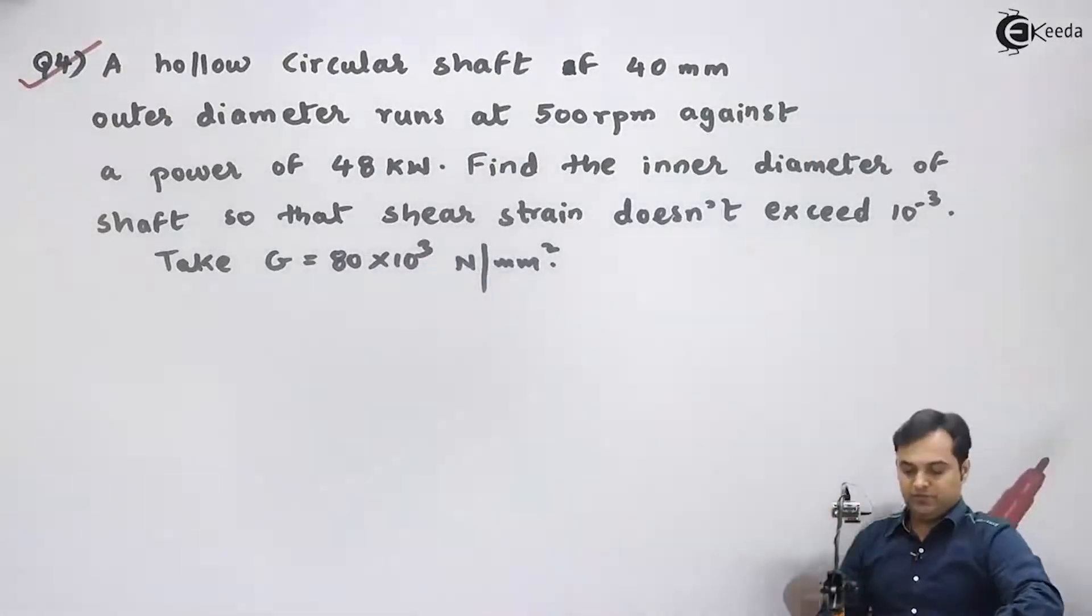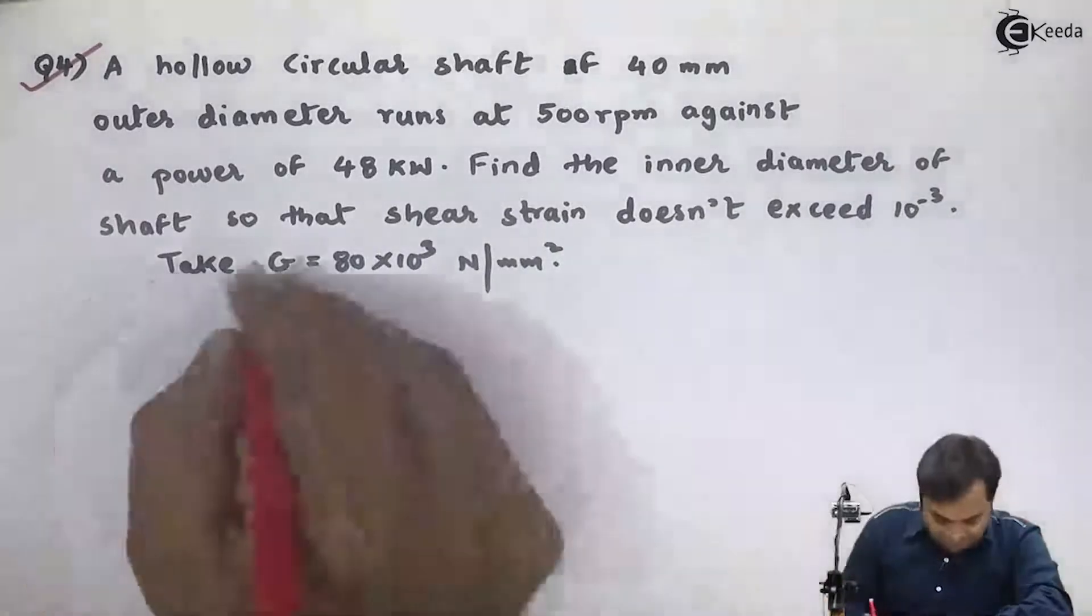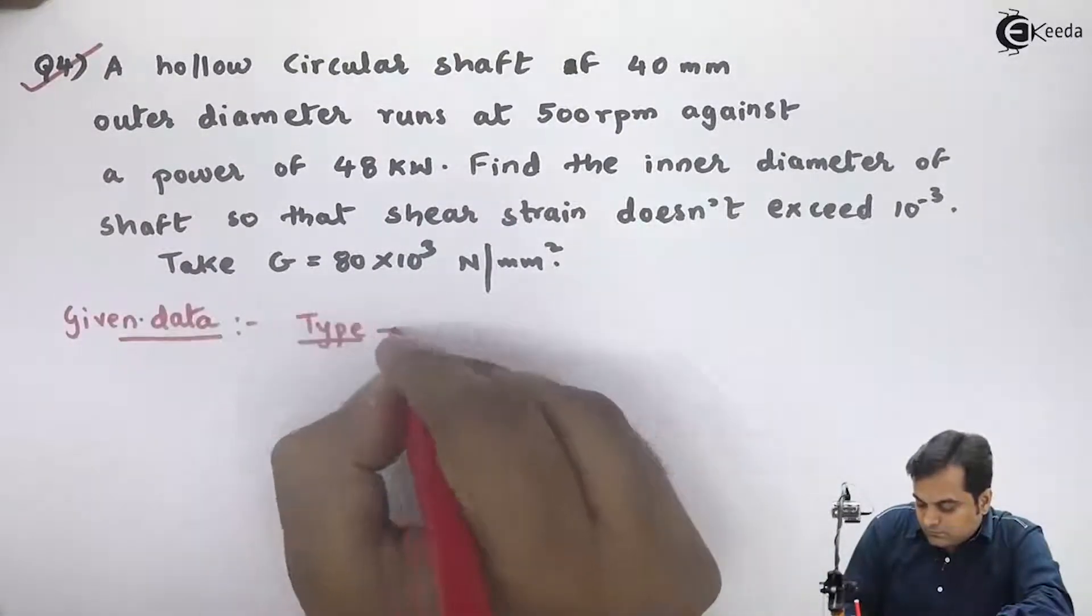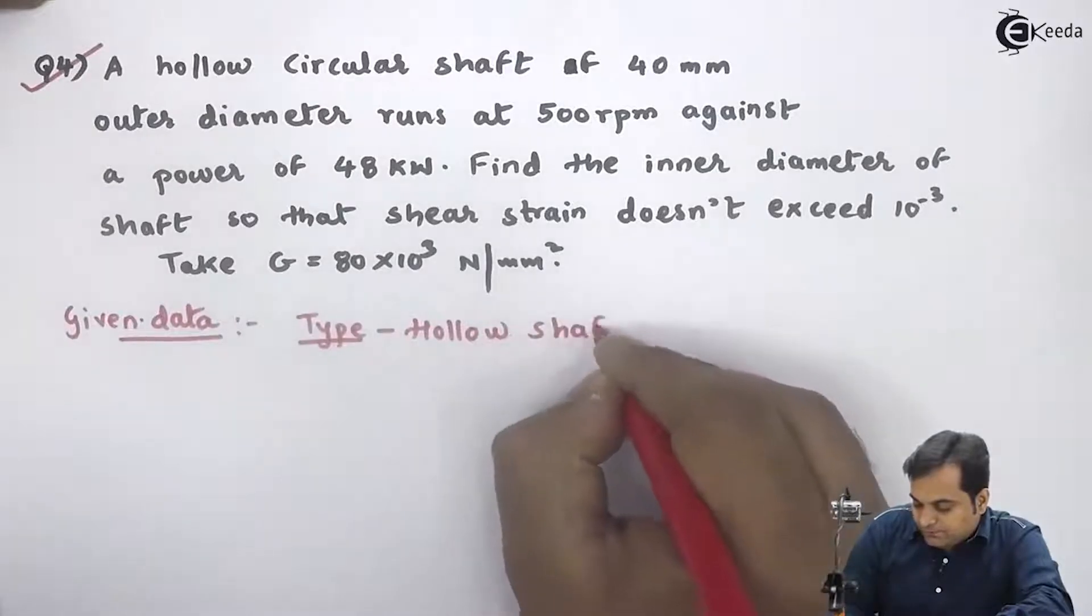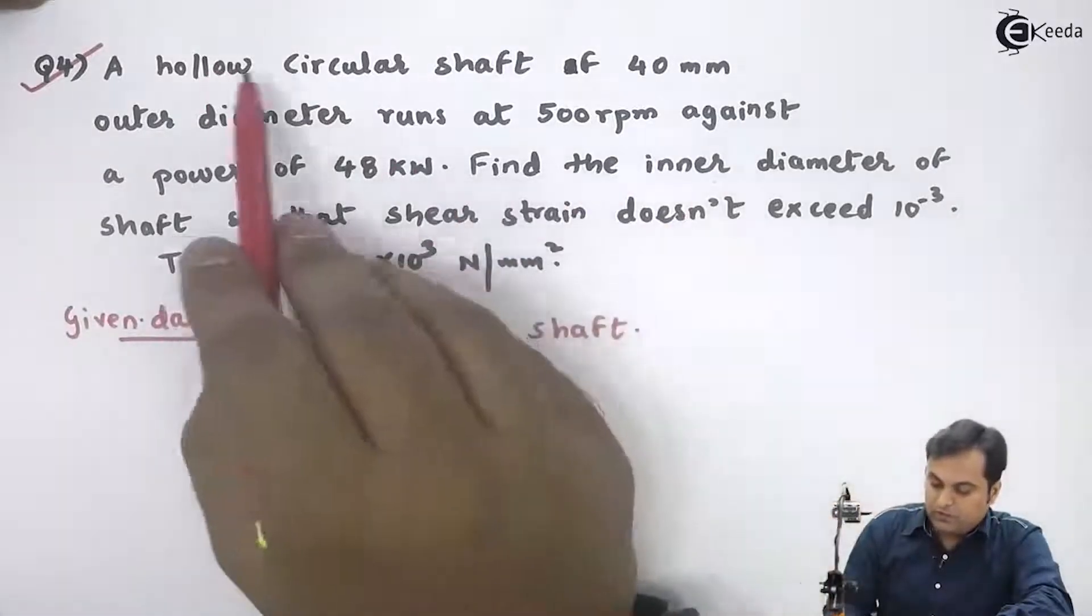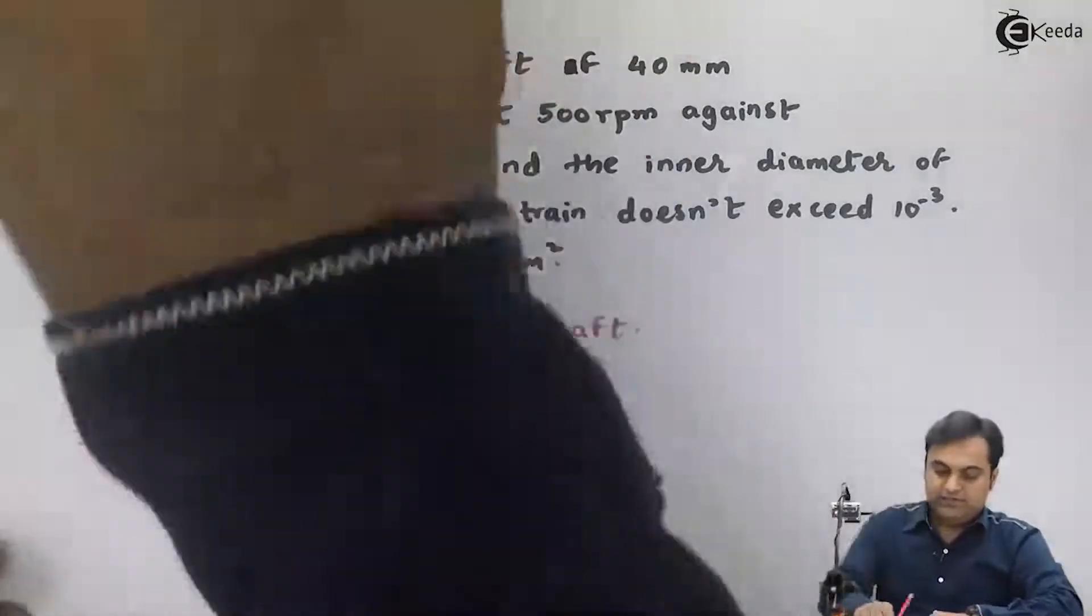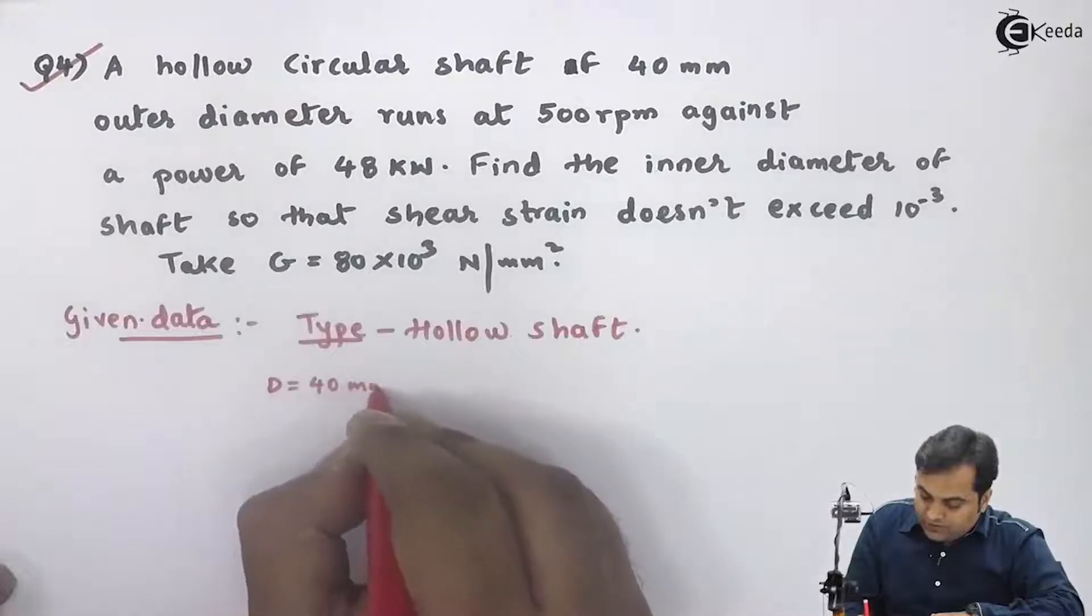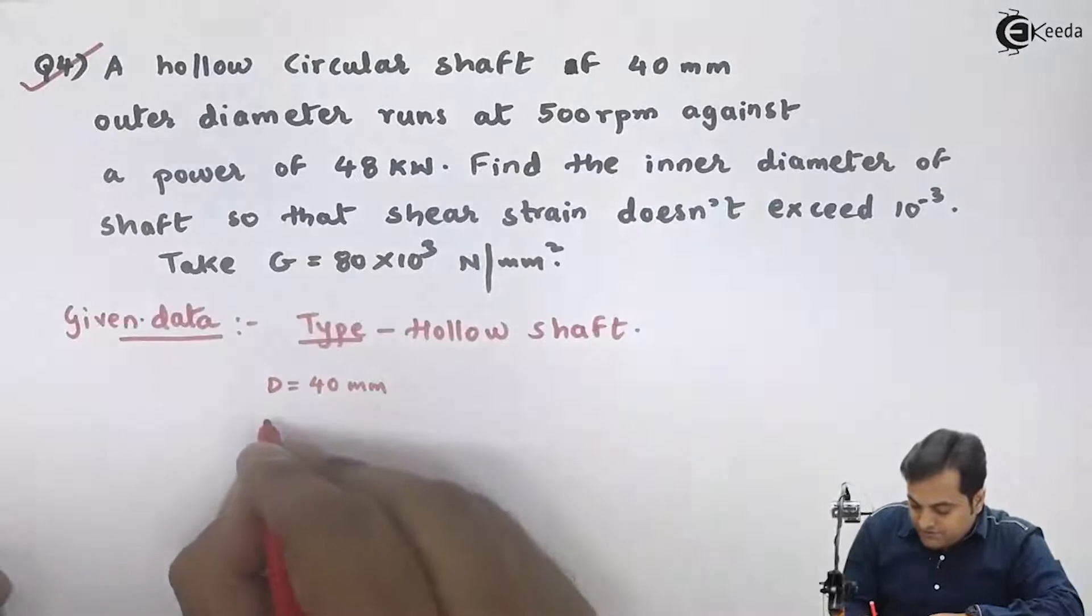Now this is the question which we have. We will write the data first. The type of shaft: it is hollow. A hollow circular shaft of 40 mm outer diameter, so I'll write down capital D is 40 mm. Runs at 500 rpm, speed is given.